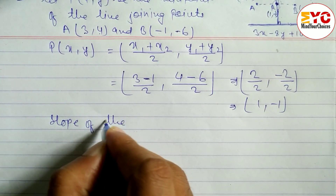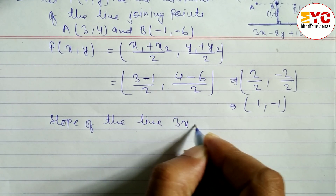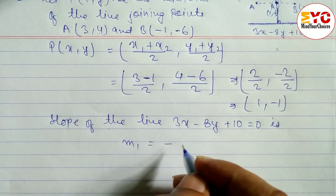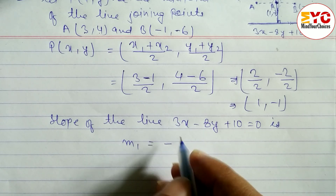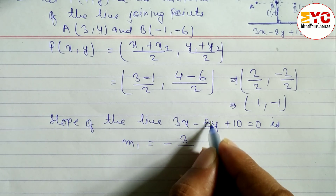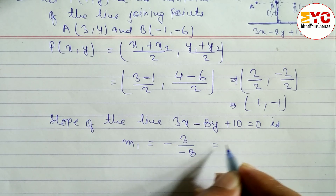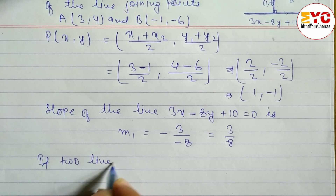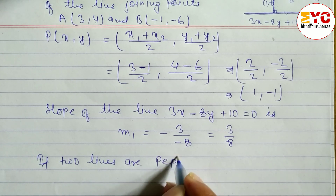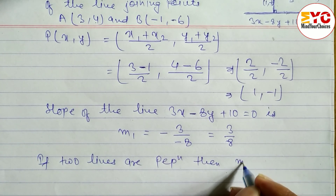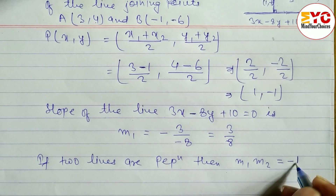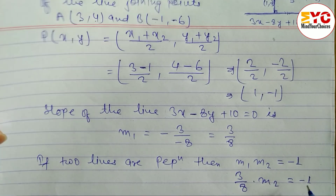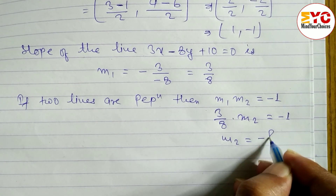Slope of the line 3x minus 8y plus 10 = 0: M1 = minus coefficient of x divided by coefficient of y = -3 / -8 = 3/8. Since the lines are perpendicular, M1 times M2 = -1. So (3/8) times M2 = -1, giving M2 = -8/3.